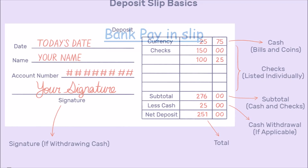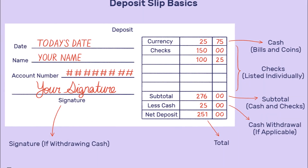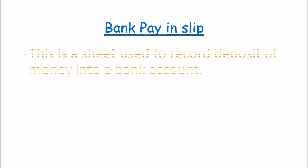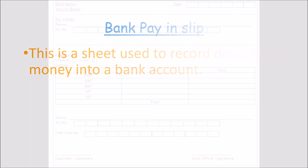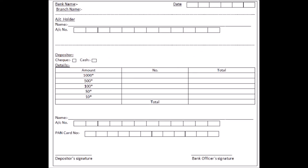Bank paying slips. In most banks, when you need to deposit money into the bank, you first fill out what we call a bank paying slip. A paying slip is simply a sheet used to record deposit of money into a bank account. The money could be either cash or cheque. The paying slip gives evidence that money has been deposited into a bank account, and it is this document that provides the information fed into the cash books.